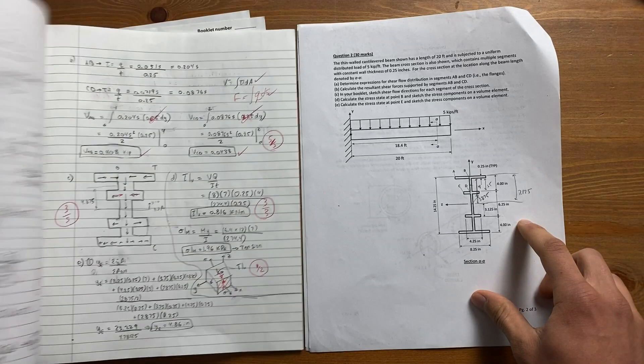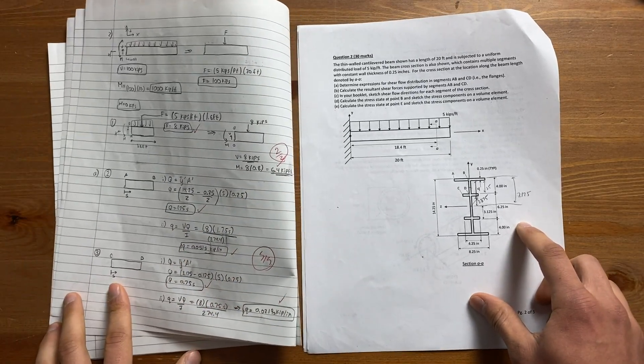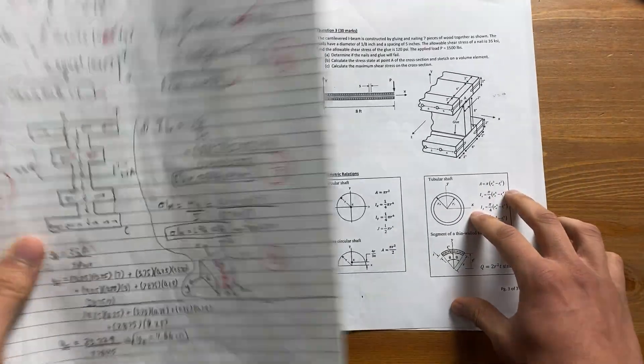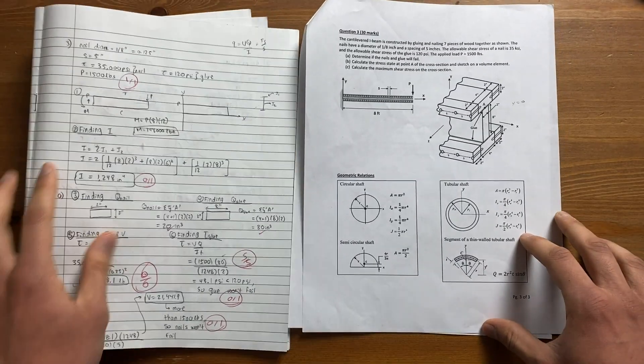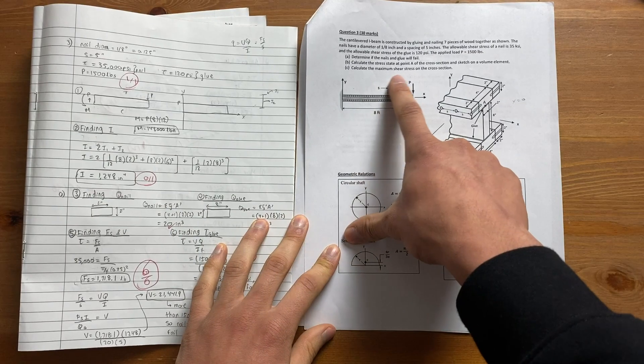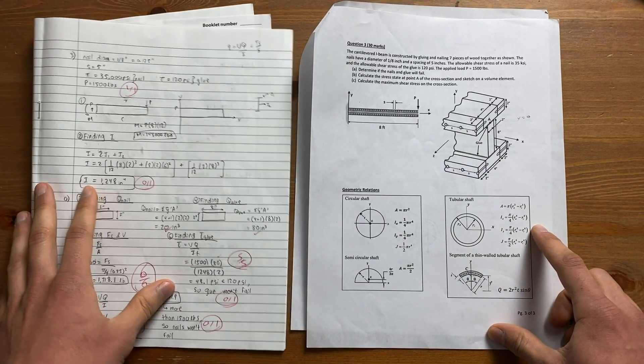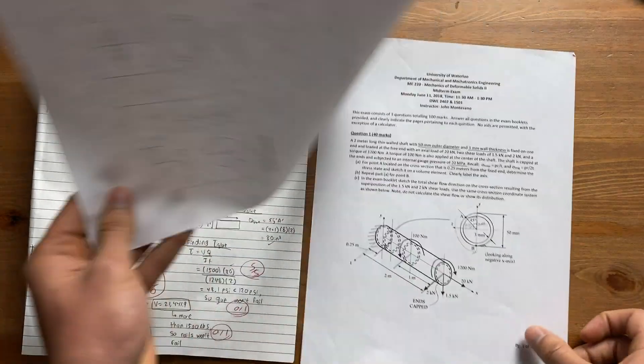The second question tells us that we have a beam attached to a wall and asks us to find the stress acting on certain points along the beam. I use a lot of equations and basic physics concepts to solve this question. My work here is pretty messy because I was trying to get this question done in 30 minutes but it was taking me a little bit longer. The third question is similar to the second one - we had a wooden beam attached to the wall held together by nails and some glue. The question asks us if the nails and glue will fail and we also have to calculate the maximum stress or loading that this beam can handle before it fails.